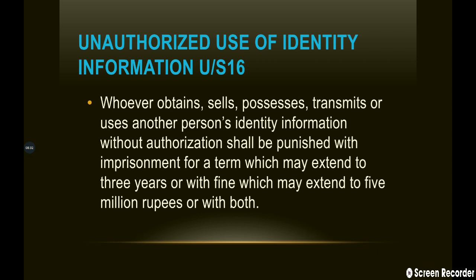جو کوئی unauthorized use of identity information کرتا ہے، section 16 میں اس کی سزا کیا ہے؟ A person who commits this offense shall be punished with imprisonment for a term which may extend to 3 years, or with fine which may extend to 5 million روپے، یا دونوں۔ جس بندے کی identity information obtain، sell، possess، transmit یا use کی گئی ہو، وہ کسی authority کے پاس apply کر سکتا ہے for securing، destroying، blocking access، or preventing transmission of that identity information. اور authority اس application پر مناسب measures لے سکتی ہے۔